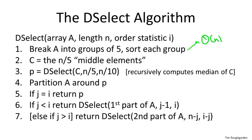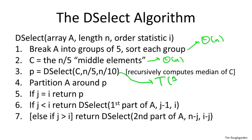Step one: constant time per group times a linear number of groups gives Θ(n). Copying the first-round winners into array C is also obviously linear time. When we get to line three, there's a recursive call — but it's easy to understand: it's just recursing on an array that has n/5 elements, which is 20% of the original. So that contributes T(n/5) to our recurrence.